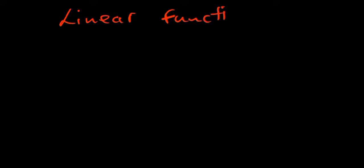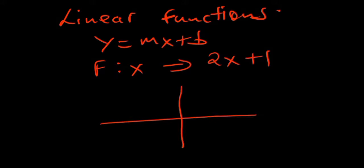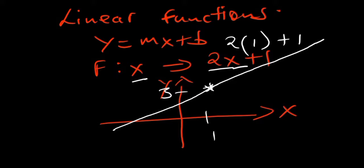Linear functions are straight lines in the form y = mx + b. For example, 2x + 1. If you sketch it on a graph with x values and y values, you plug in a value of x at every point. Say you're at x = 1: two times one plus one gives you three. That's how a linear function works.